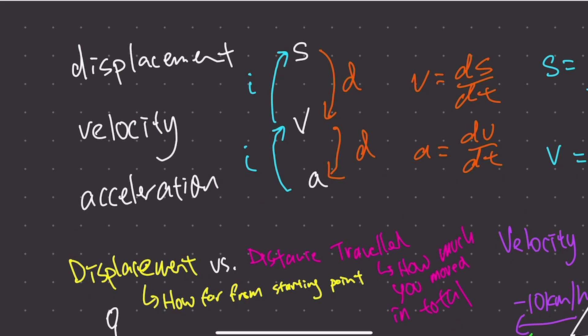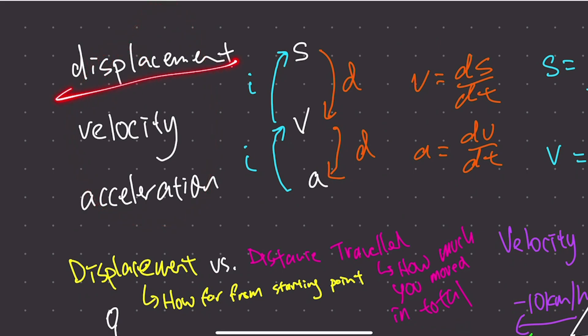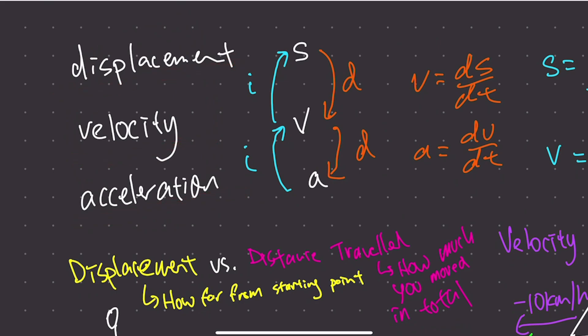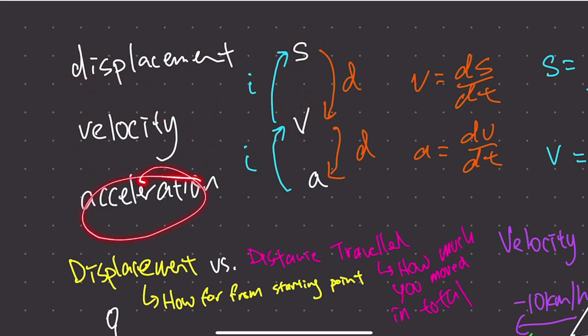In kinematics, there are three best friends. Just like in trig we have sine, cosine, tangent — the three best friends — in kinematics we have displacement, velocity, and acceleration. In mathematical symbols, displacement is usually S, velocity is V, and acceleration is A.